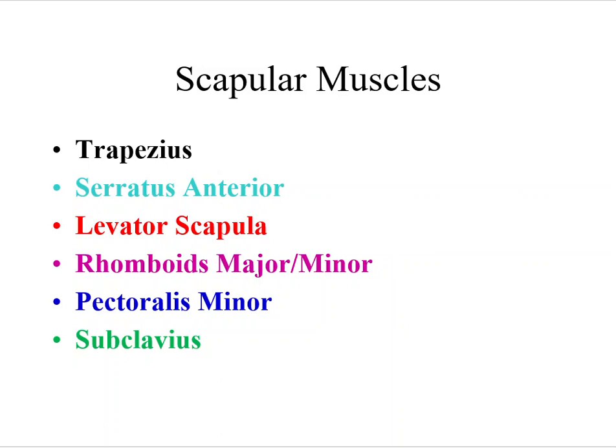Let's look at the scapular muscles. There are five or six, depending on how you count them, scapular muscles, and one muscle that goes from the thorax to the clavicle. What's unique about these muscles is they do not cross the GH, or the glenohumeral joint, so they do not do any major motion at the shoulder joint.